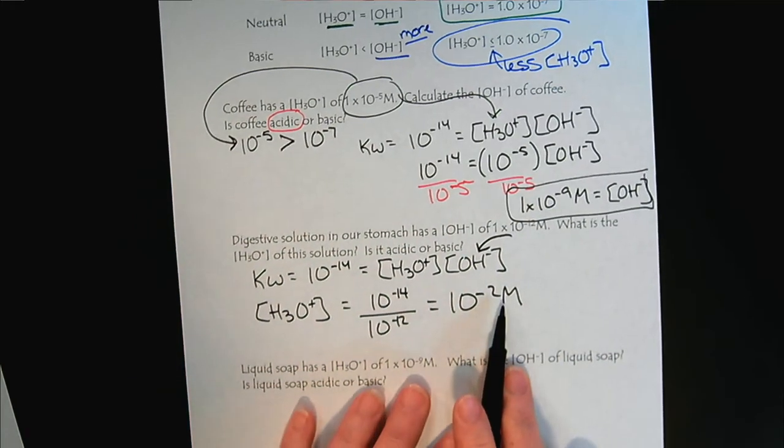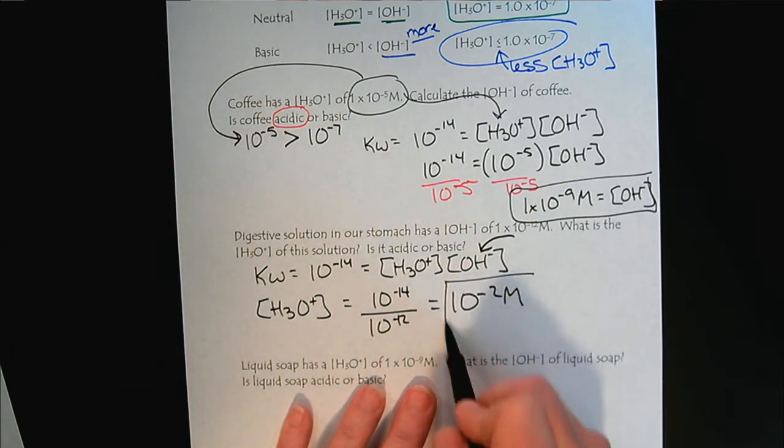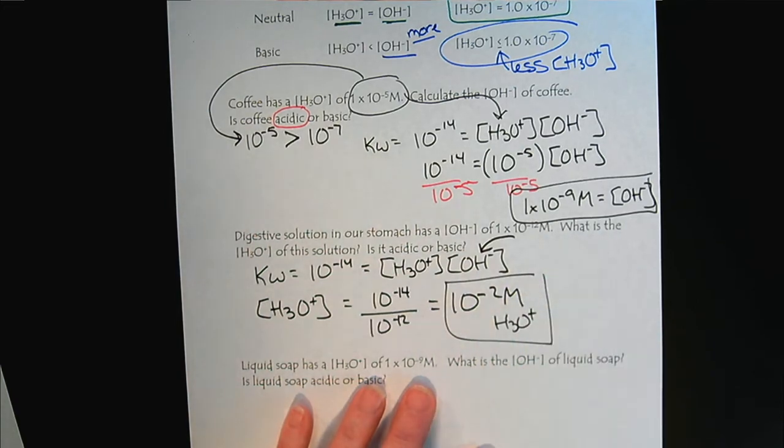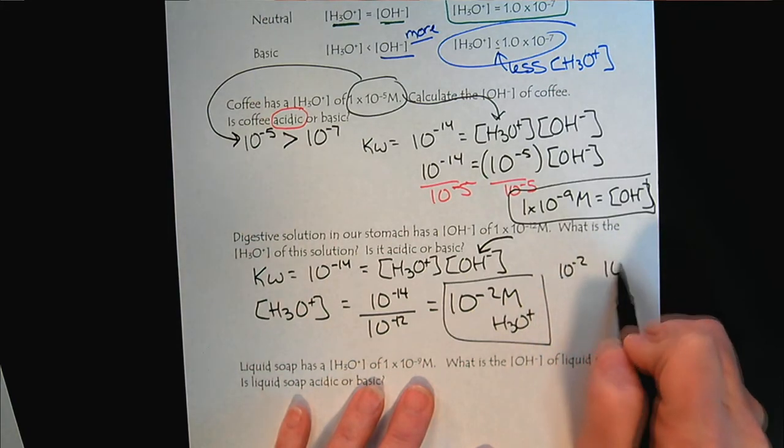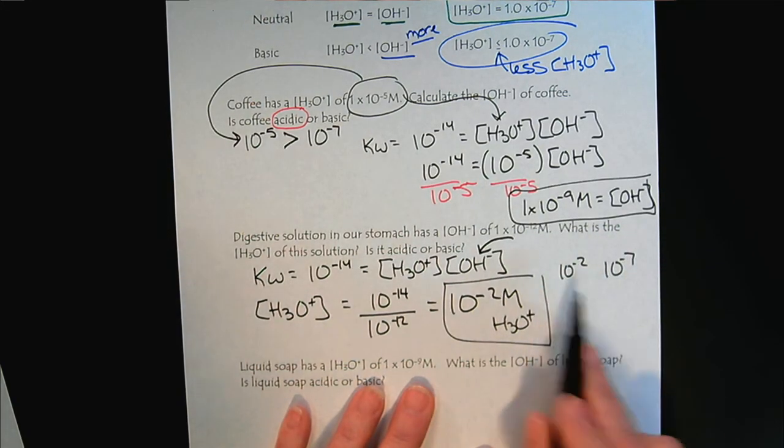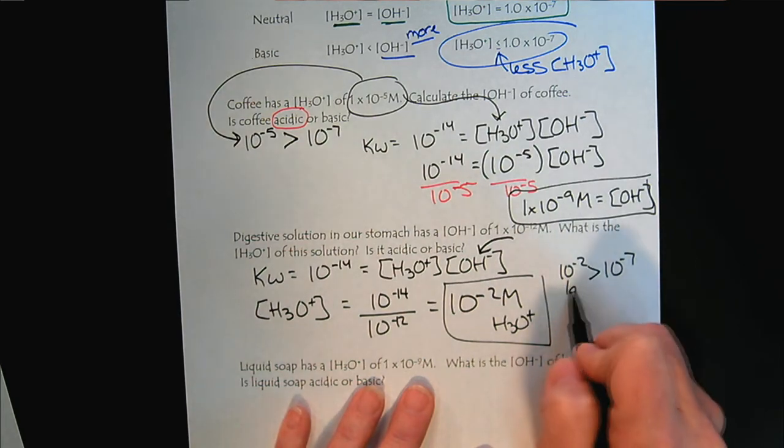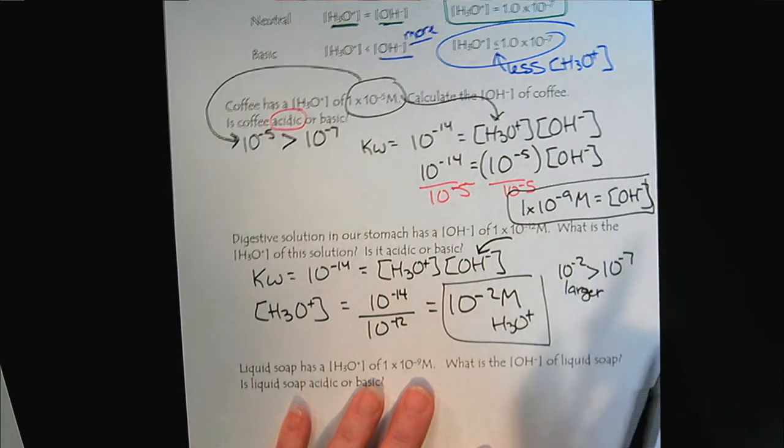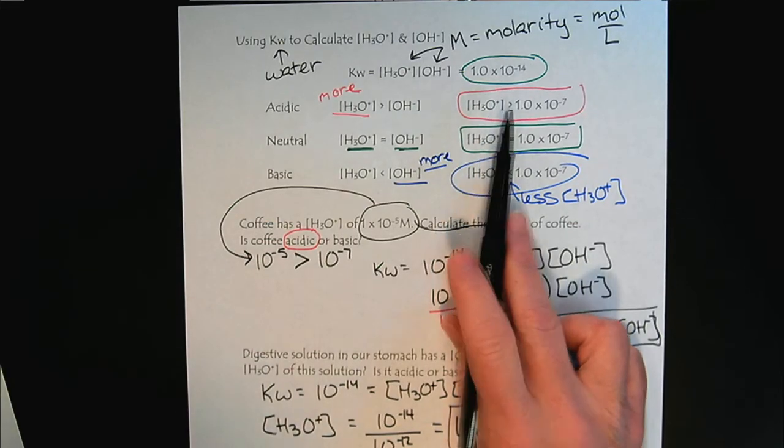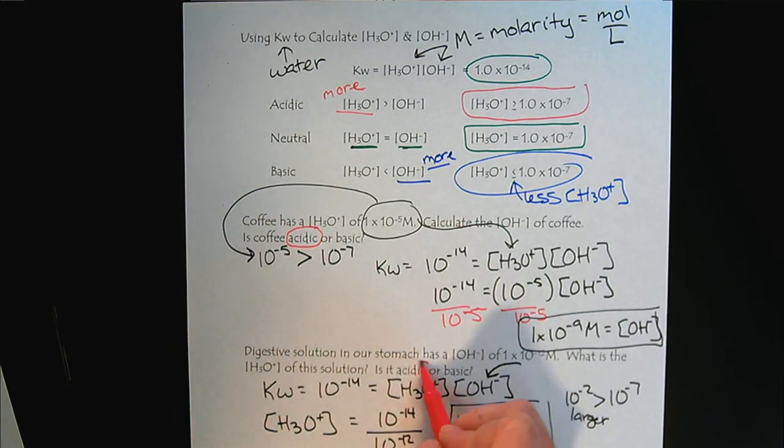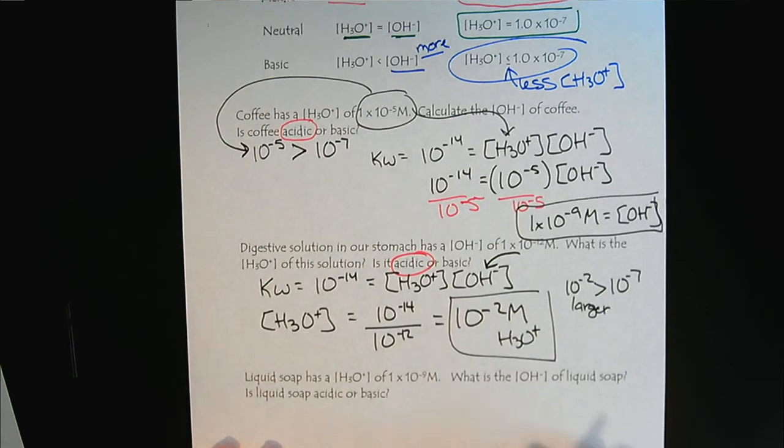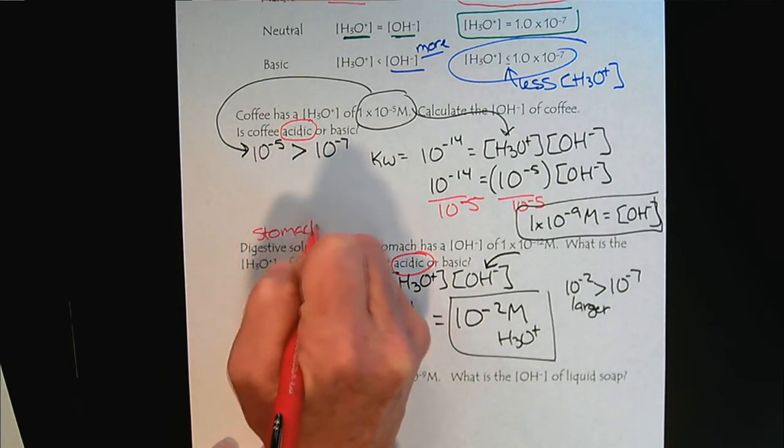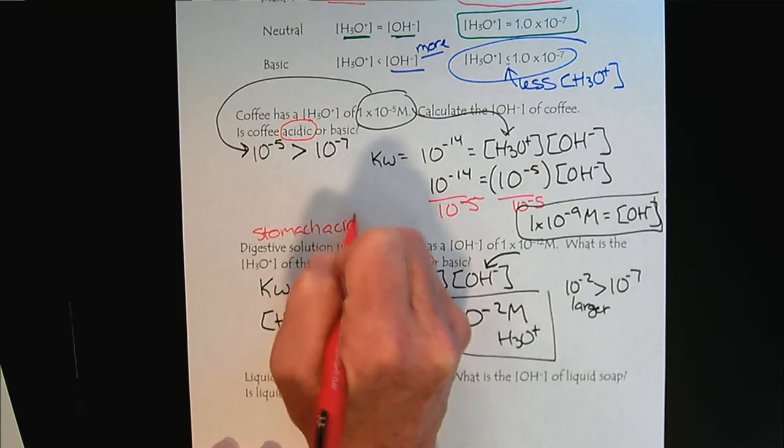And so if we look at 10 to the, so that's the answer to the first part. And then we look at the relationship between 10 to the minus 2 and 10 to the minus 7. 10 to the minus 2 is a larger number. And so when we have a high hydronium ion concentration, we would say, of course, the digestive solution in our stomachs is stomach acid. So this makes sense.